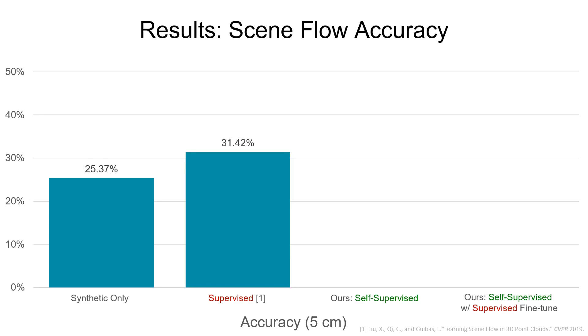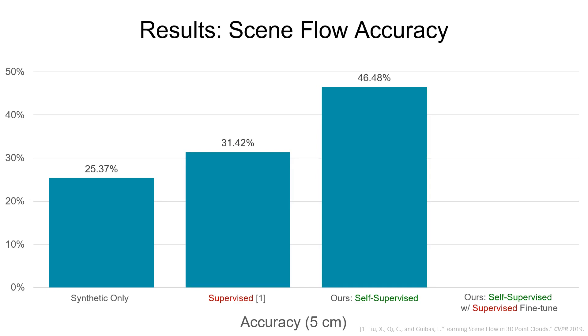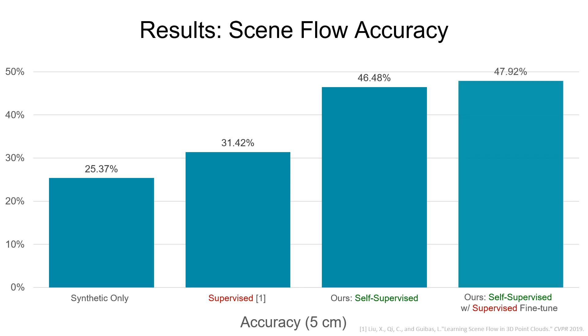Supervised fine-tuning on a small amount of labeled real data brings this accuracy up to 31%. Our method, using only self-supervised training and a large, unlabeled dataset, achieves an accuracy of 46%, with a slight improvement when a small amount of labeled data is added.